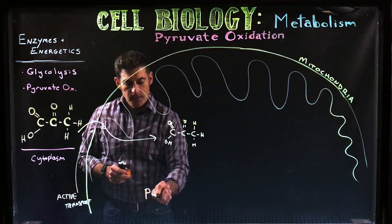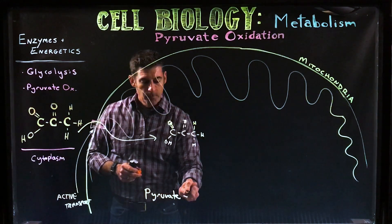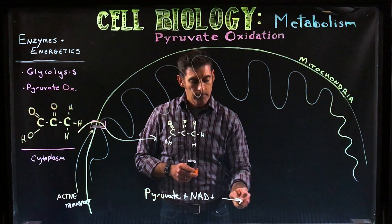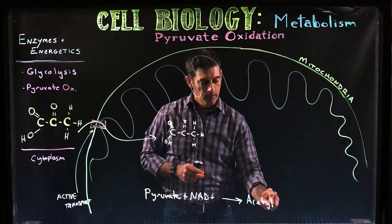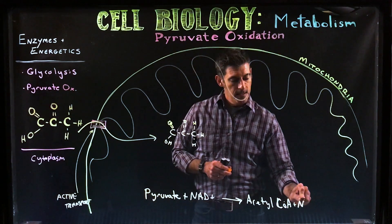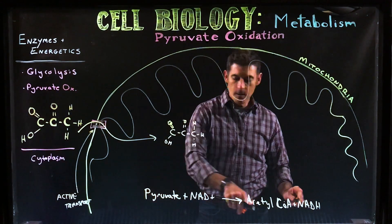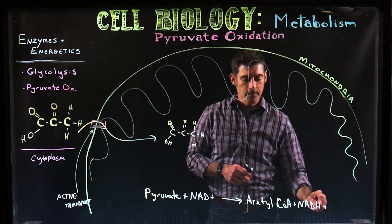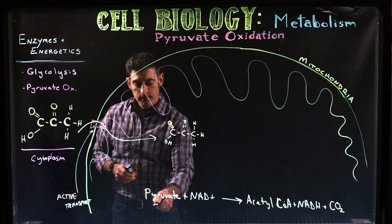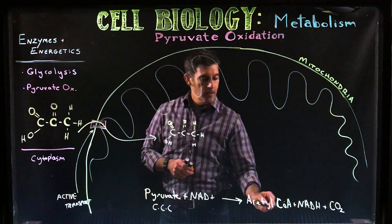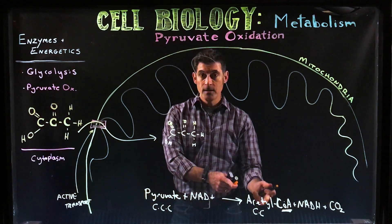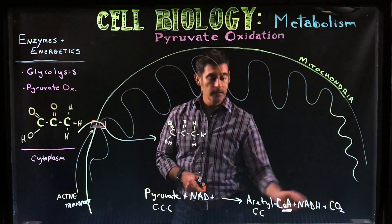The equation for what occurs here: pyruvate plus an NAD+ molecule produce acetyl-CoA plus NADH. The pyruvate becomes acetyl-CoA, and NAD+ becomes NADH. We also produce a molecule of carbon dioxide. The pyruvate is a three-carbon molecule, and the acetyl-CoA's acetyl group has only two carbons, so one of those carbons leaves as carbon dioxide.